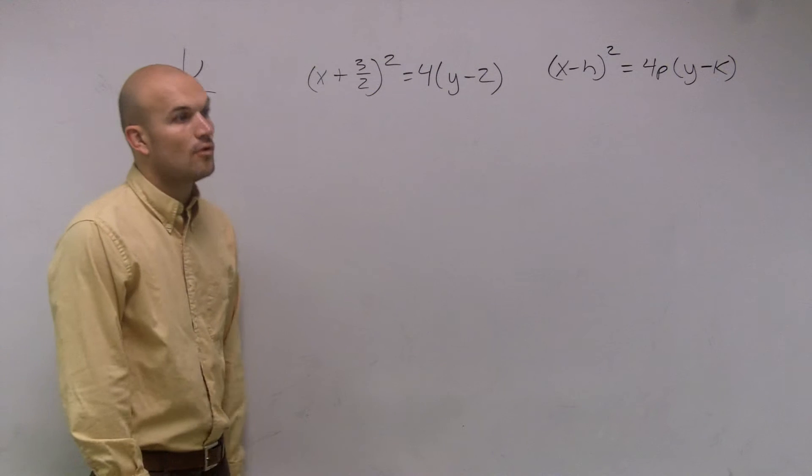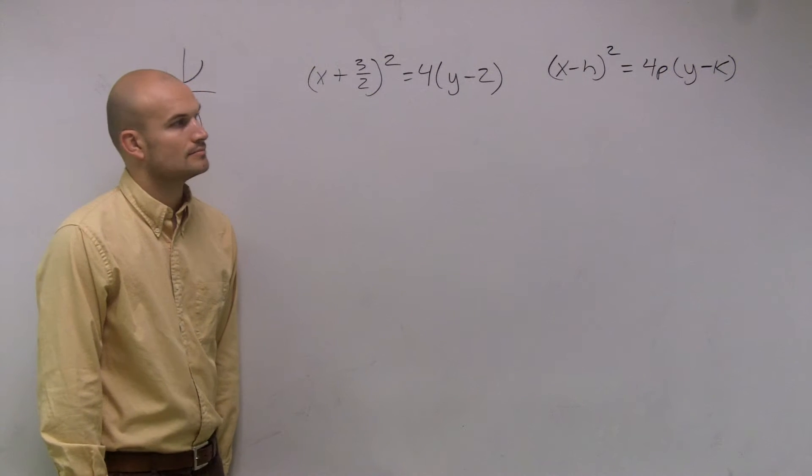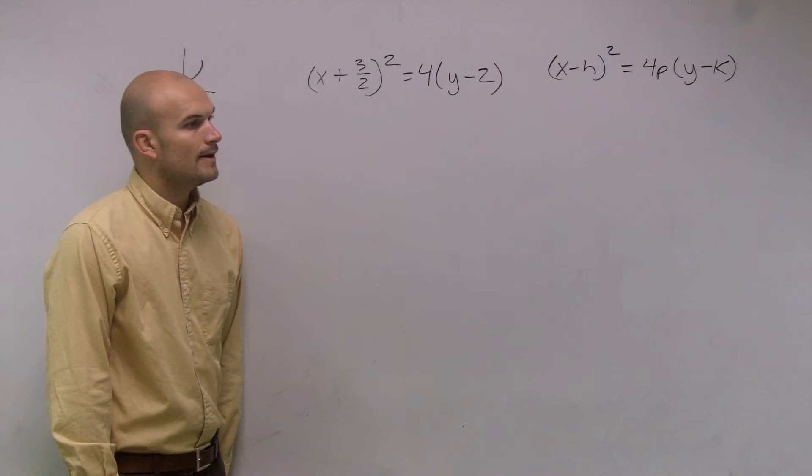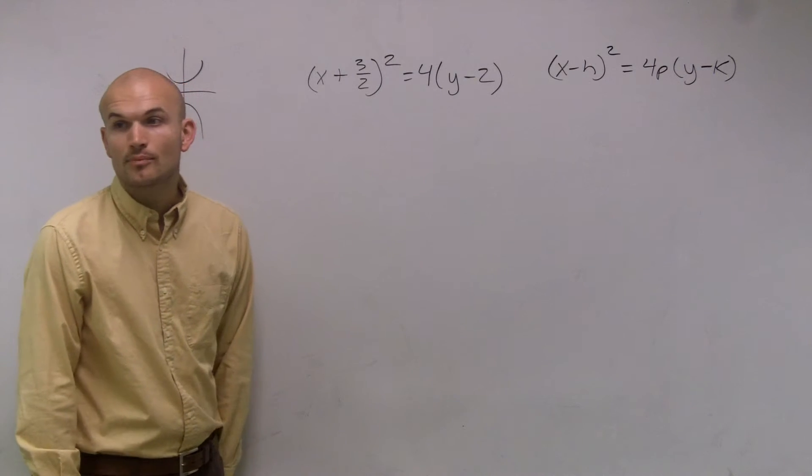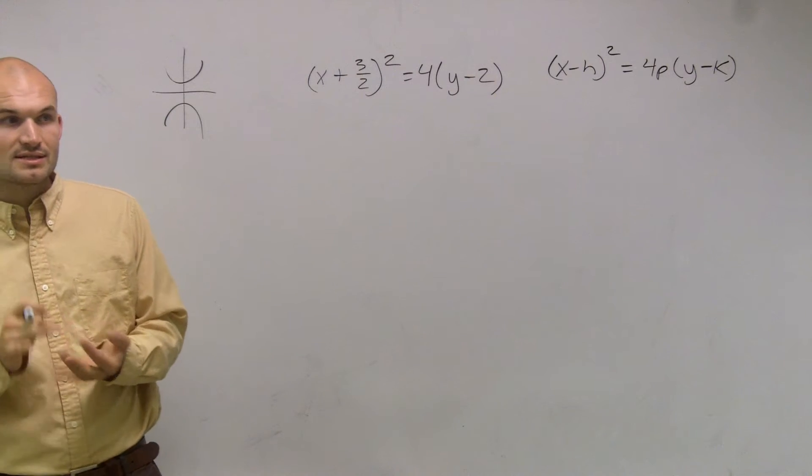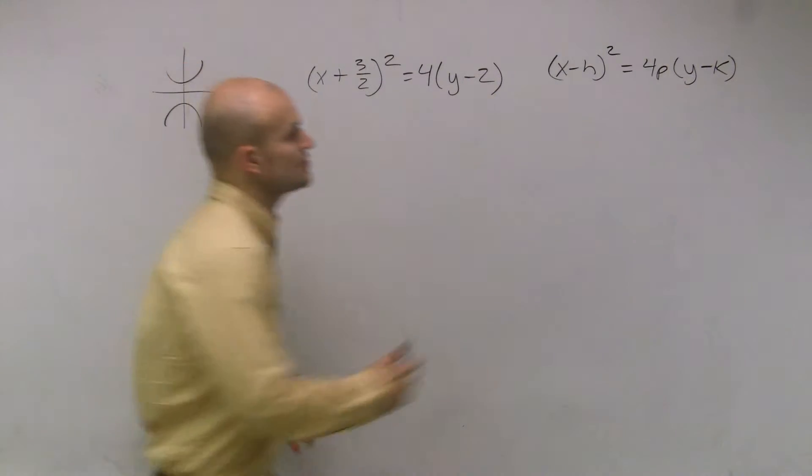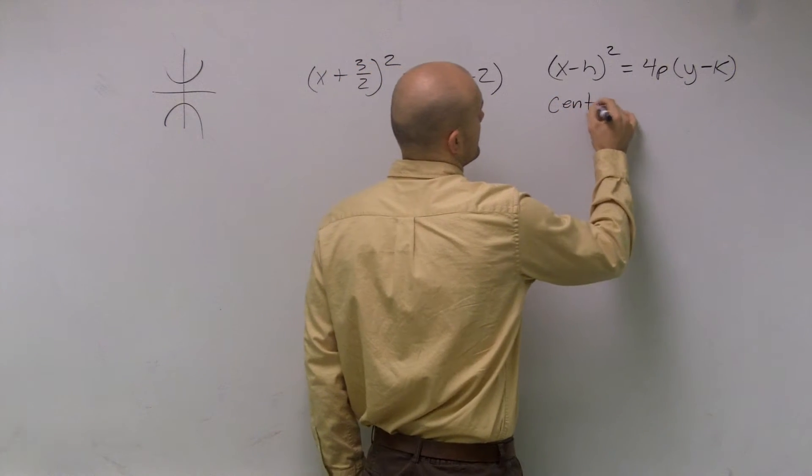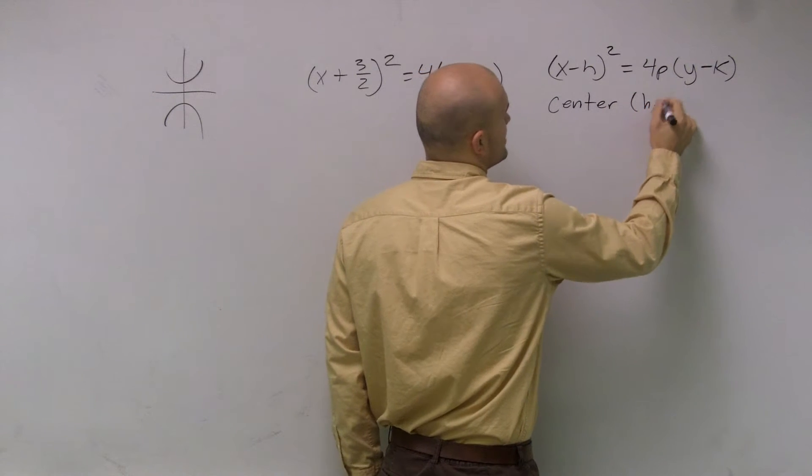So that is going to be our standard form for our parabola. Now that we know the standard form, we're going to figure out what the center is, what the focus is, and what our directrix is. The center is h comma k.